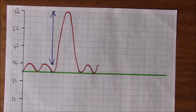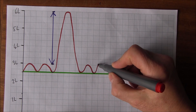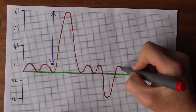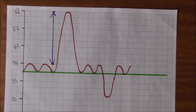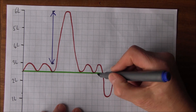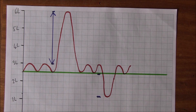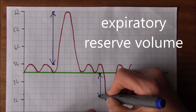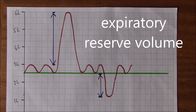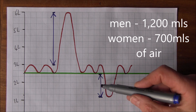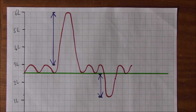After breathing normally for a while, I decide I'm going to breathe out as much as I possibly can — keep going, keep going — and I breathe out as much as I possibly can, then go back to normal breathing. That figure from where I normally stop breathing out to the maximum I can ever breathe out is called the Expiratory Reserve Volume. In men that's about 1,200 mils and in women about 700 mils.